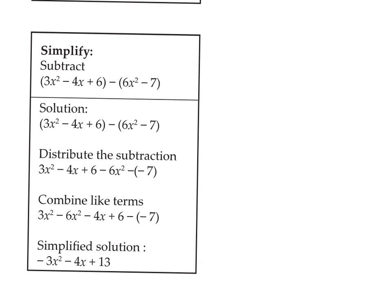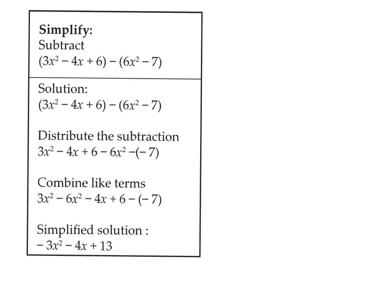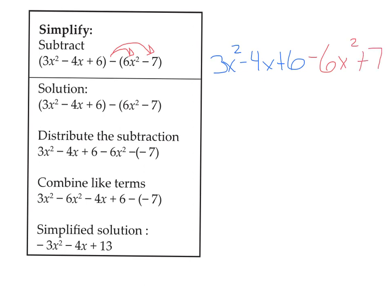In the second example we have subtraction, which is just a tad bit different from addition. We have a trinomial, and we're subtracting from it a binomial, which means two terms. When we subtract, this subtraction in the middle has to be distributed to the polynomial behind it as we drop the parentheses. So the trinomial at the front stays the same: 3x² minus 4x plus 6. Then this negative or subtraction symbol distributes and changes the signs. So we'll have negative 6x² plus 7, because negative times positive gives us negative, and negative times negative gives us positive.